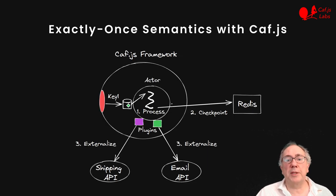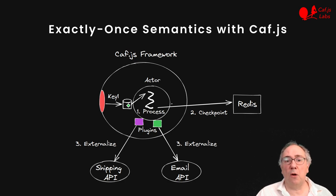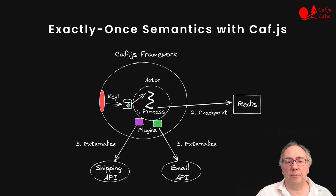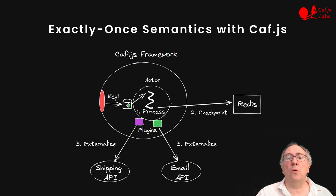We can also recover exactly-once semantics. In KVJS, actors are transactional. Processing a message starts a transaction that captures in a log changes to the actor state and pending external interactions. When processing finishes without errors, the framework commits by checkpointing the log in Redis, and after that the external calls are made. By delaying external calls, we can always abort cleanly before commit. And also, when we crash and restart, a reloaded actor will always first check the log for committed external actions and ensure they get done.